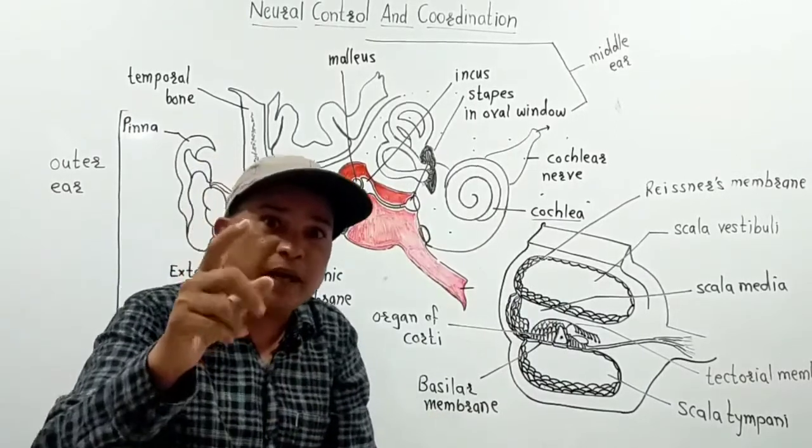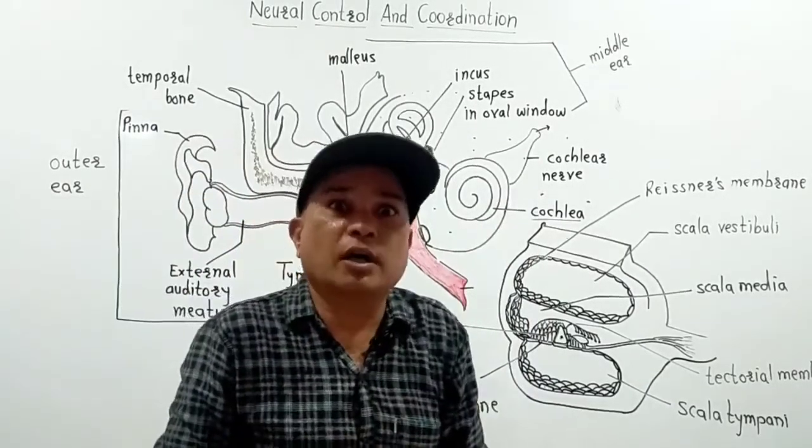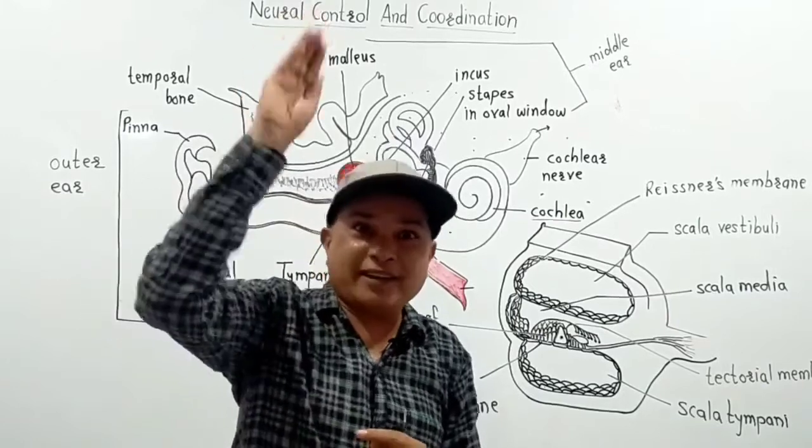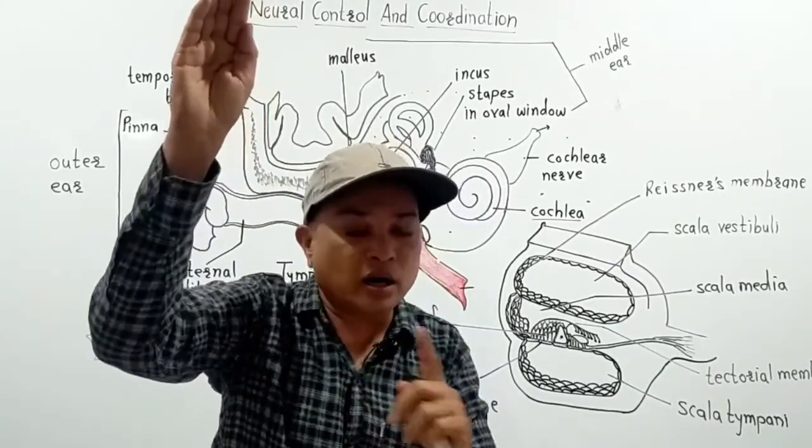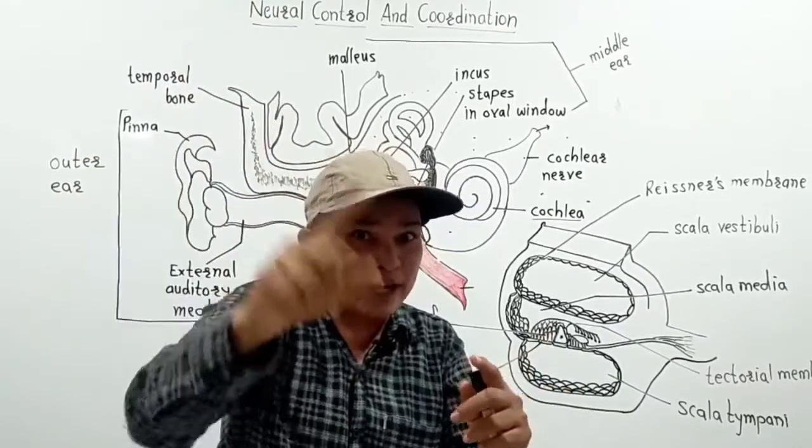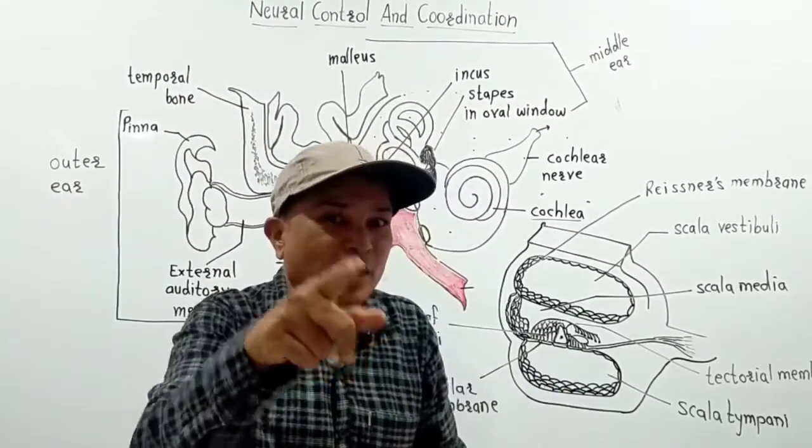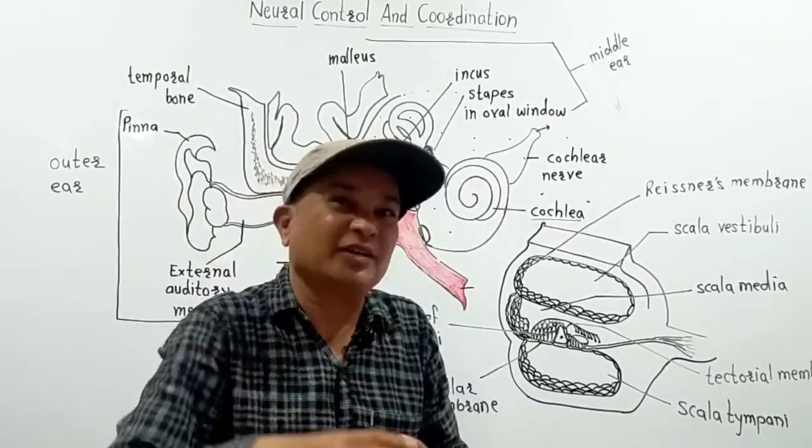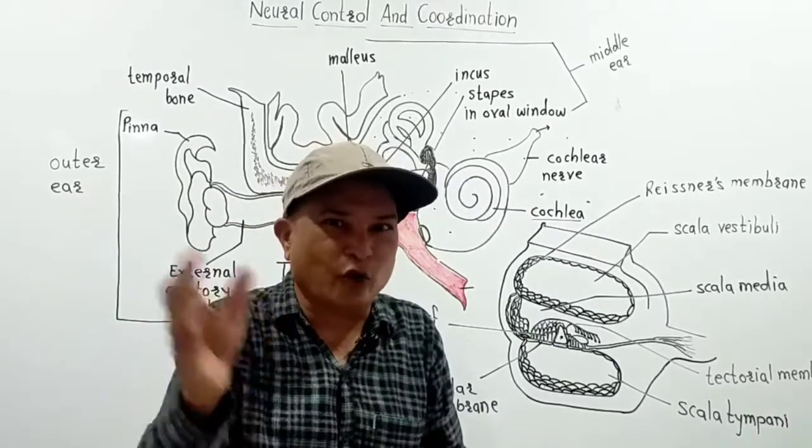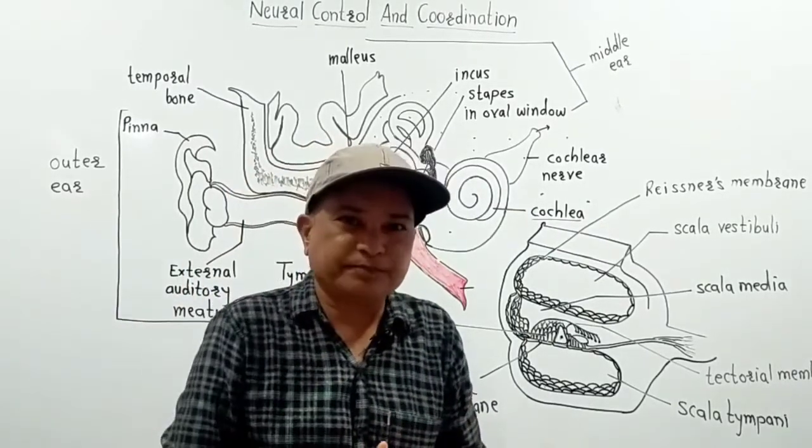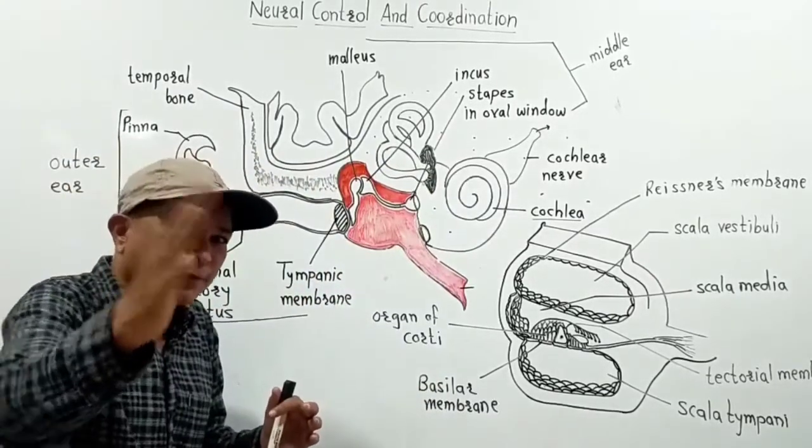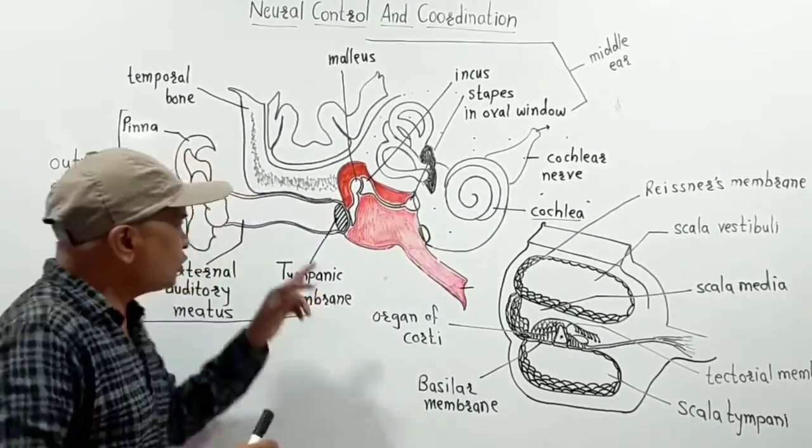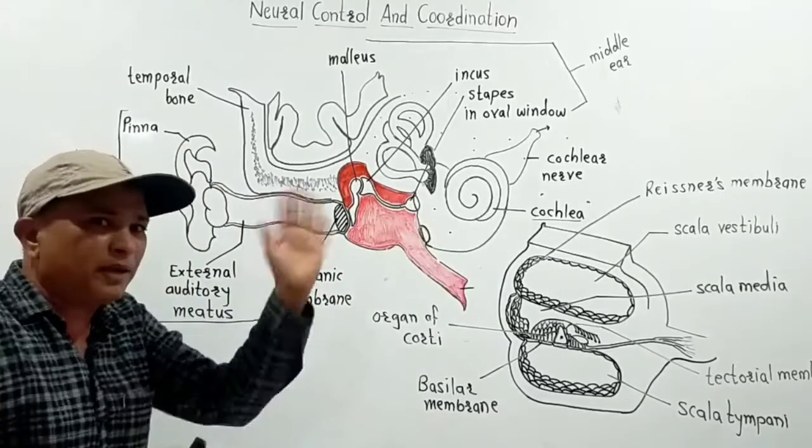Like in a temple there is a gong, right? Those waves, those vibrations. You would have seen in the lab a tuning fork, in physics the tuning fork, how vibrations occur. So this eardrum vibrates after receiving these sounds. As soon as the eardrum or tympanic membrane vibrates...